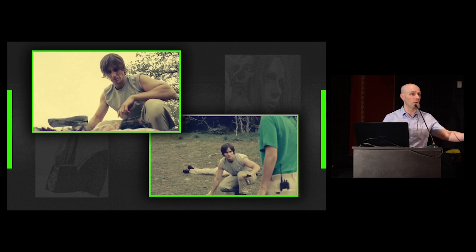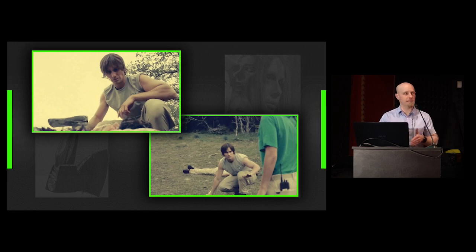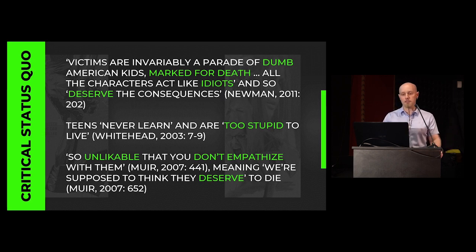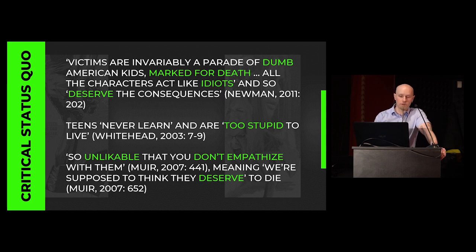So we remove the seemingly core ingredient — the teens still die one by one as the narrative progresses conventionally, but in a slightly unexpected way. What this film does is smarter and more interesting than just being amusing, and it becomes more evident when we consider a different kind of conventional expectation: the expectations of critics. Kim Newman puts it that victims are invariably a parade of dumb American kids marked for death, and all characters act like idiots who deserve the consequences that befall them. Whitehead agrees that teens are too stupid to live, and Murr puts it that they're so unlikable we don't empathize with them.